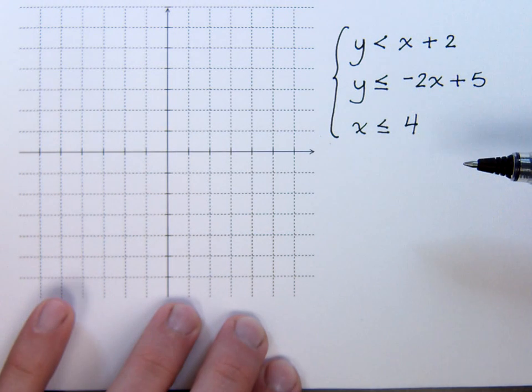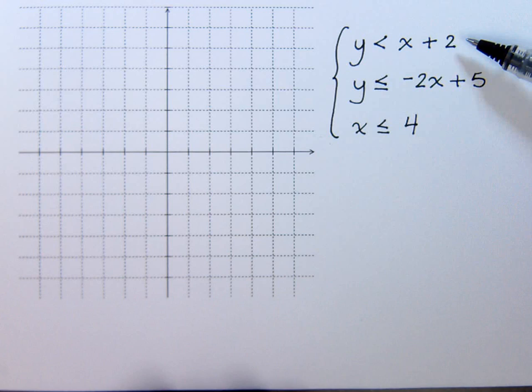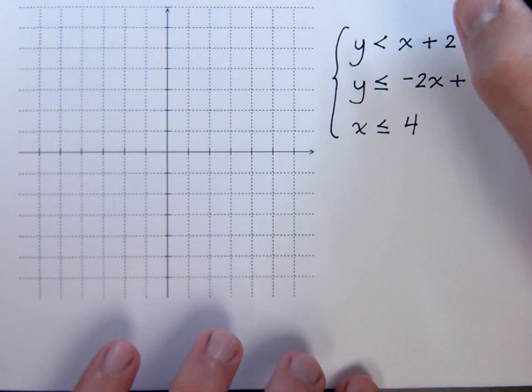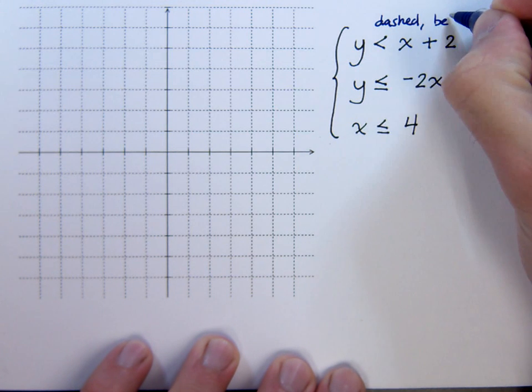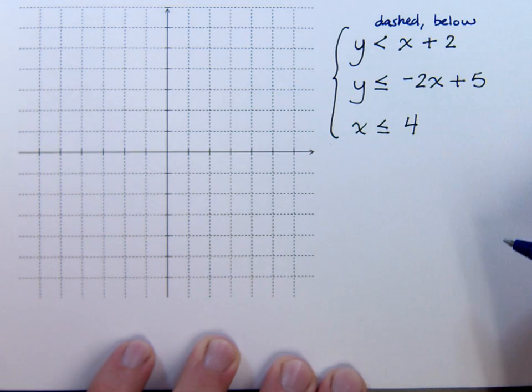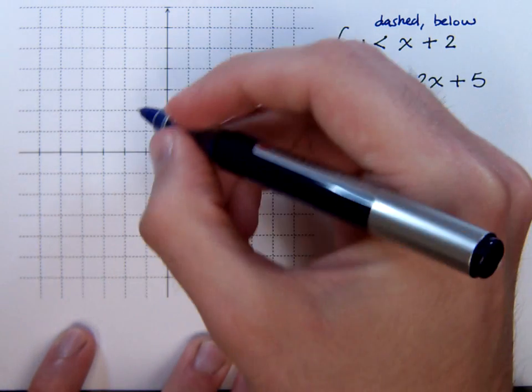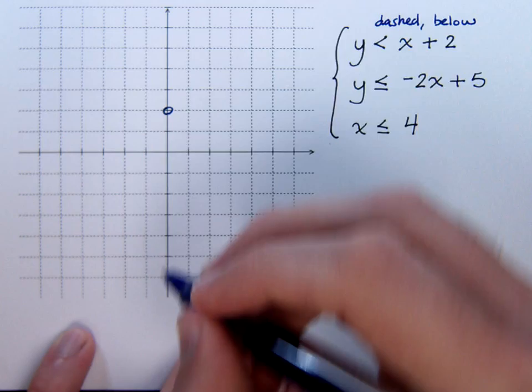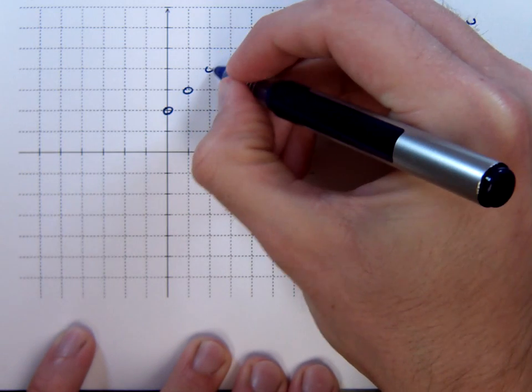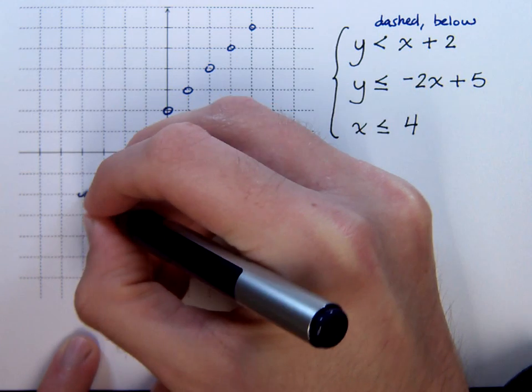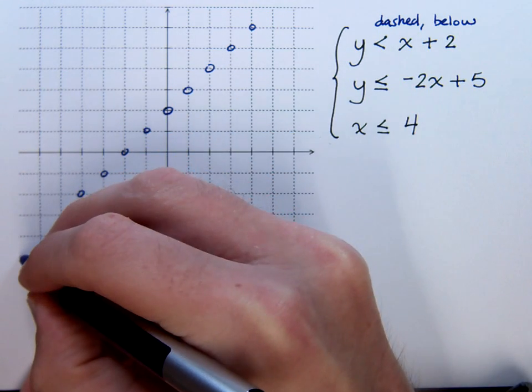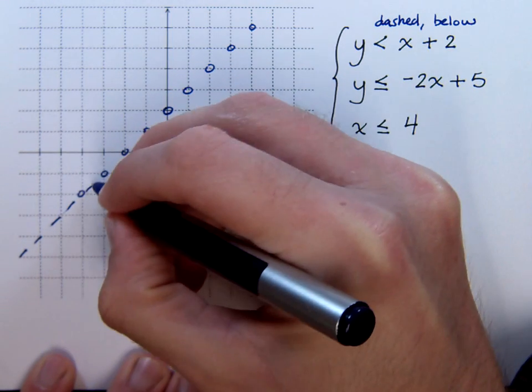So let's take these a piece at a time. For this first one right here, we see that we need to be dashed and shading below. So we have a y-intercept of 0, 2, a slope of 1. So I have all of these nice key points right here.